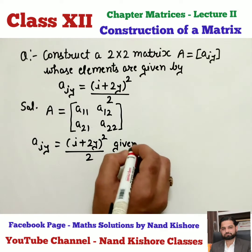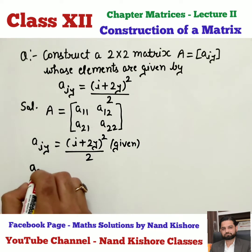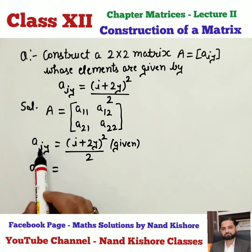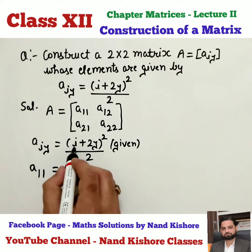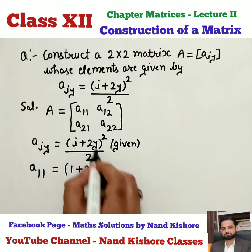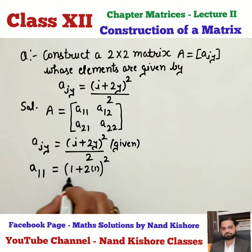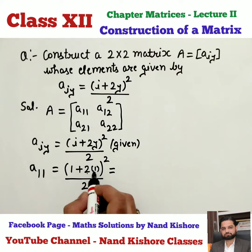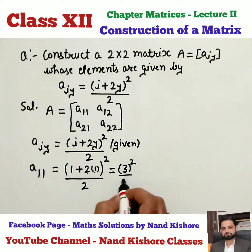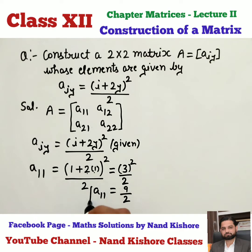This is given to me. If I want to find the value of A11, that means I need to put I as 1 and J as 1 in this equation. So instead of I, I put 1, and instead of J, I use 1 again. Then whole square divided by 2. 2 into 1 is 2, 2 plus 1 is 3, so we get 3² / 2, and 3² is 9, giving us 9/2. That means value of A11 comes out to be 9/2.